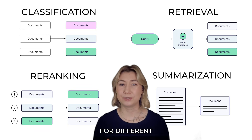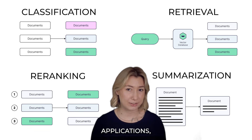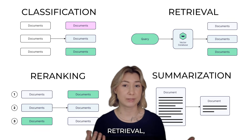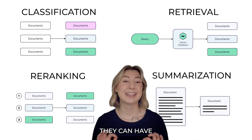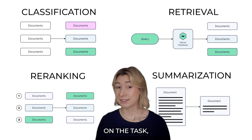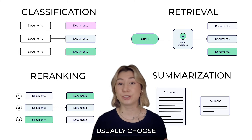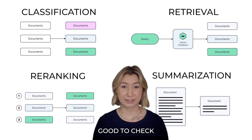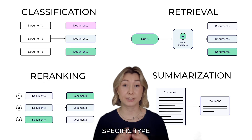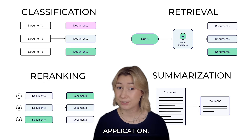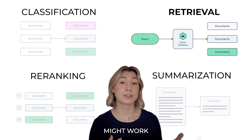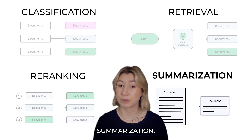Different models are also fine-tuned for different applications, whether it's classification, retrieval, re-ranking, or summarization. They can have different outputs based on the task, and you can usually choose a task at runtime. It's always good to check how a model performs on your specific type of application, as some will perform better for retrieval while others might work better for summarization.